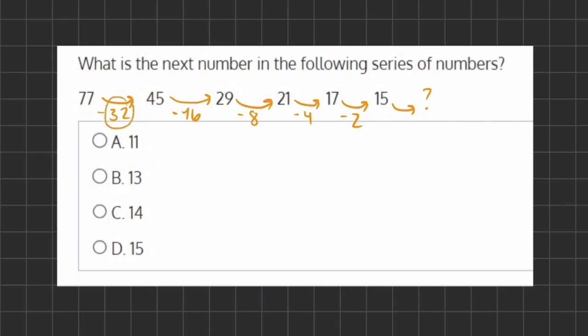So if here we subtracted by 32, here we are going to subtract by half of 32 which is 16. And so we keep dividing by 2, and if we follow this pattern,